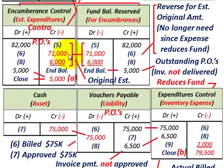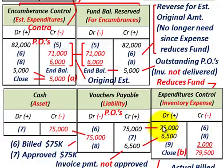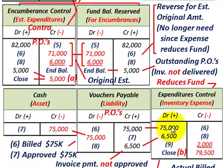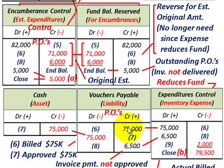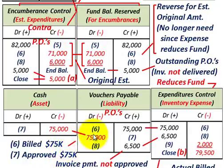We increase our expenditures control and set up our liability through vouchers payable, and therefore we can reduce our encumbrances and fund balance reserve — because these will be recognized as expenses that go directly to the unreserved fund balance. We've taken care of the $75,000 payable. Once the vouchers are approved for $75,000, we debit or reduce our payable by $75,000 and credit our cash account for $75,000.